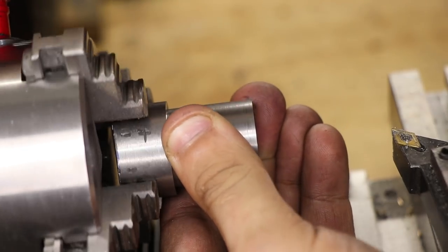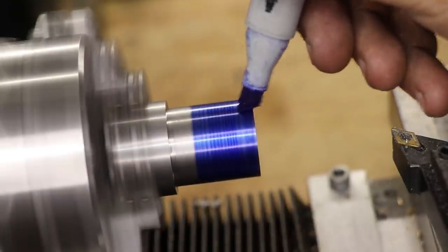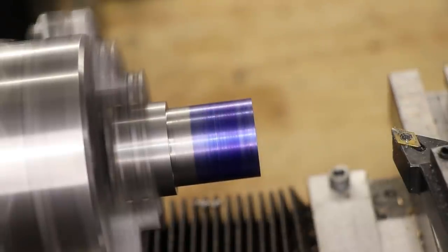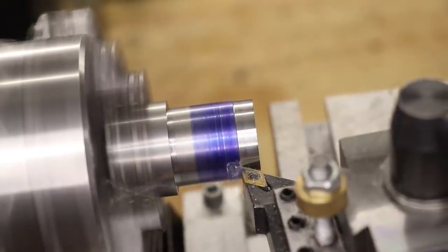The final thing left to make is the height adjustment ring. I'll take the outside down to about 22 millimeters in diameter.